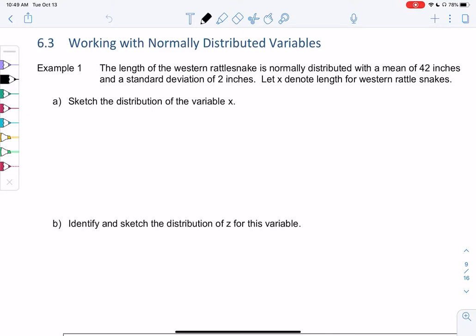So example one, I think we looked at these rattlesnakes already. The length of a western rattlesnake is normally distributed with a mean of 42 inches and a standard deviation of 2 inches. And x is my variable, my length of western rattlesnakes.